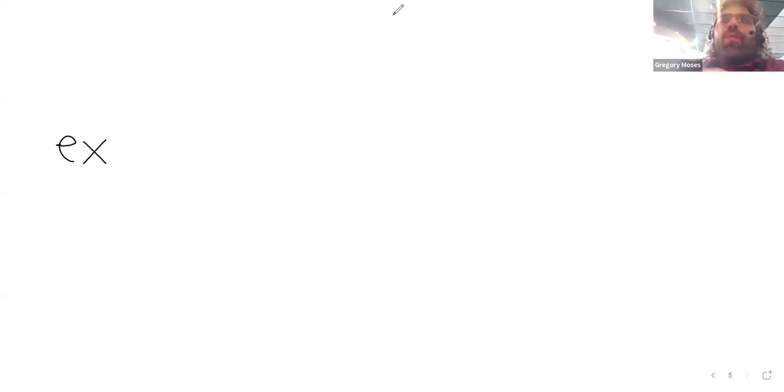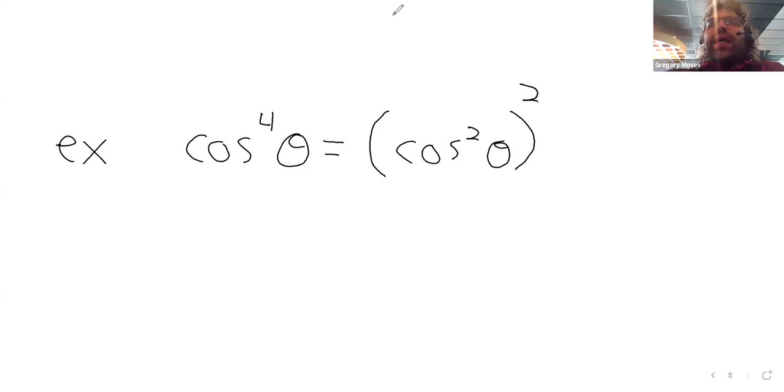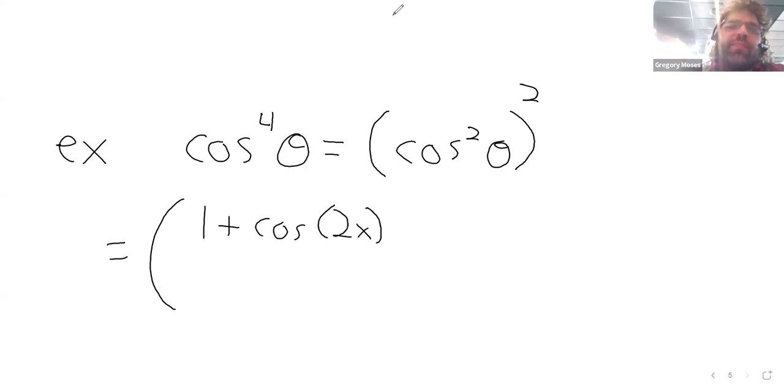So let's look, for example, at how this reduction formula works if we've got the cosine to the fourth of theta. Well, what you do here is you observe that the cosine to the fourth is the cosine squared squared. And then you hit this cosine squared with the reduction formula. So we've got 1 plus the cosine of 2x divided by 2 squared.